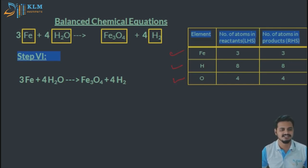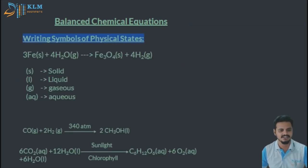But what about their physical state? In what form are they in? You do not know about that, so we need to represent that also. You can write the symbols for that. You can see here I have mentioned a pretty small table: S for solid, L for liquid, G for gaseous, and AQ for aqueous. Here in the previous reaction which we balanced, Fe is in solid state, water is in gaseous state, Fe3O4 is in solid state, and H2 is in gaseous state.